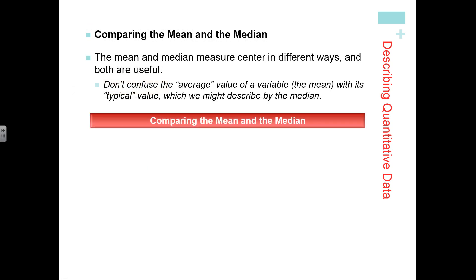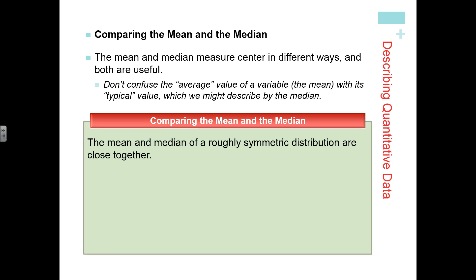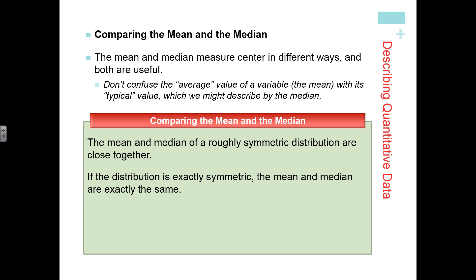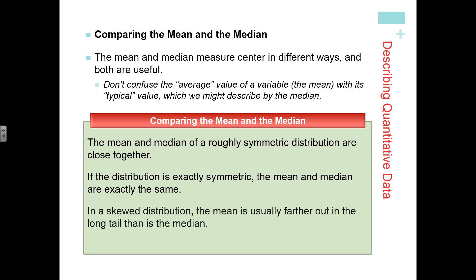So right now we have two ways of looking at center: the mean and the median. Both measures tell us something very different — going back to the last slide, the mean and the median were not the same. If your data is roughly symmetric, your mean and median will be very close together. If exactly symmetric, they'll be exactly the same. But if your data is skewed either right or left, the mean will always be farther out in the direction of the tail of your distribution.